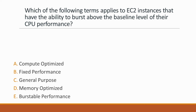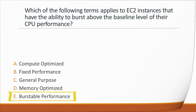Next question: Which of the following terms applies to EC2 instances that have the ability to burst above the baseline level of their CPU performance? Options: A. Compute-optimized, B. Fixed performance, C. General purpose, D. Memory-optimized, E. Burstable performance. Correct answer is option E, burstable performance, because burstable performance EC2 instances are able to burst above the baseline level of CPU performance. This is in contrast with fixed performance instances, which are set within their performance parameters.